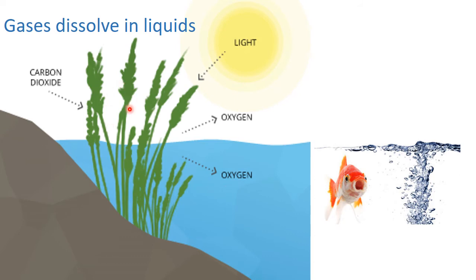Yes, plants take carbon dioxide and put out oxygen in photosynthesis. That's how we get oxygen in the water.